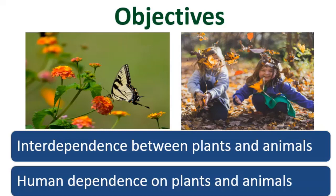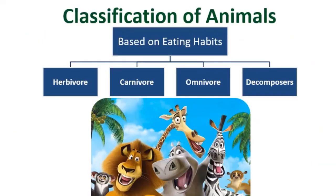Let us first understand the classification of animals. Based on eating habits, animals can be classified into herbivore, carnivore, omnivore, and decomposers. Let us understand each of these categories in detail.